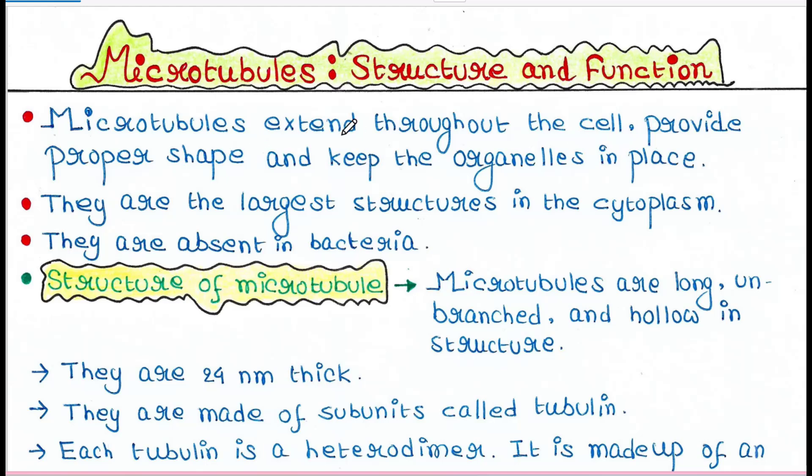Microtubules extend throughout the cell and provide proper shape and keep the organelles in place. They are the largest structures in the cytoplasm and they are absent in bacteria. So microtubules are only present in eukaryotic cells, not in prokaryotic cells.